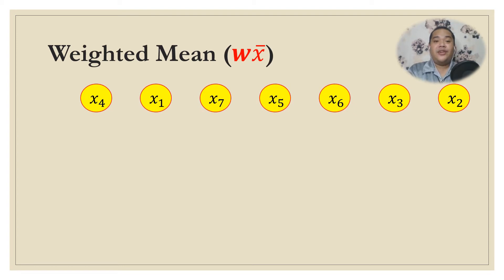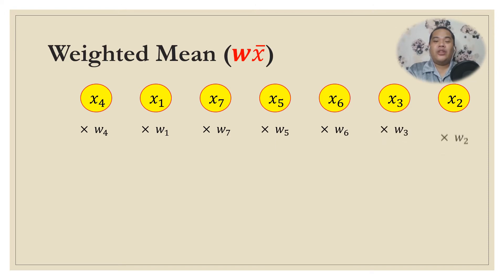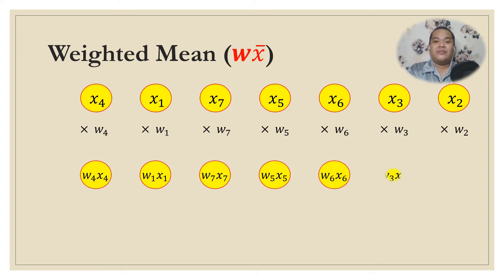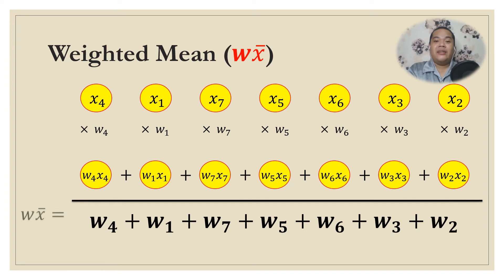Consider the following scores — this time each score has a corresponding weight. We multiply each score by its corresponding weight to obtain the products, then add all of them and divide by the total number of products to obtain the weighted mean.